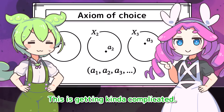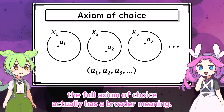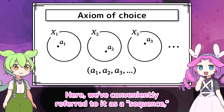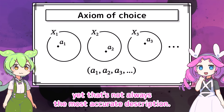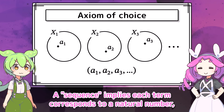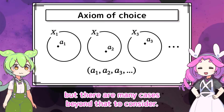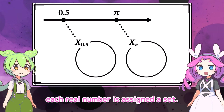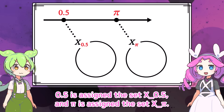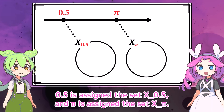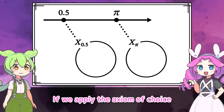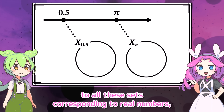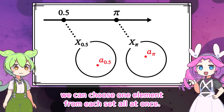This is getting kind of complicated. Also, like I briefly mentioned earlier, the full axiom of choice actually has a broader meaning. Here, we've conveniently referred to it as a sequence, yet that's not always the most accurate description. A sequence implies each term corresponds to a natural number, but there are many cases beyond that to consider. For example, each real number is assigned a set — 0.5 is assigned a set X sub 0.5, and pi is assigned a set X sub pi. If we apply the axiom of choice to all these sets corresponding to real numbers, we can choose one element from each set all at once.